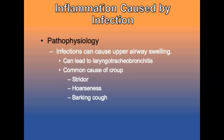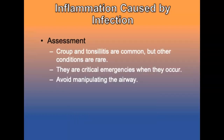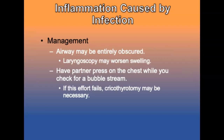Infections can cause upper airway swelling, leading to inflammation of the larynx, trachea, and bronchi. A common cause is croup, characterized by stridor and a barking cough, commonly occurring in infants and small children. Many deadly upper airway conditions are now rare due to widespread immunization. Croup and tonsillitis are common, but other conditions are rare and critical emergencies — avoid manipulating the airway unless absolutely necessary, as laryngoscopy may worsen swelling.